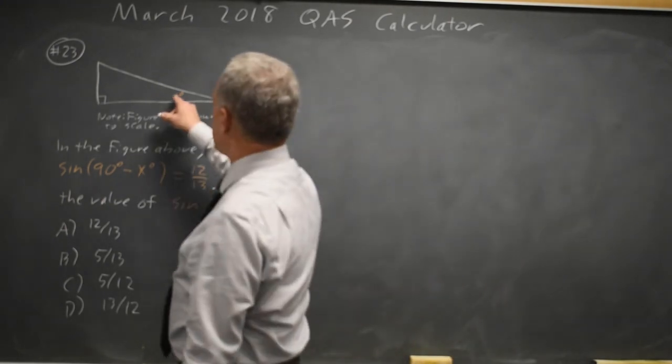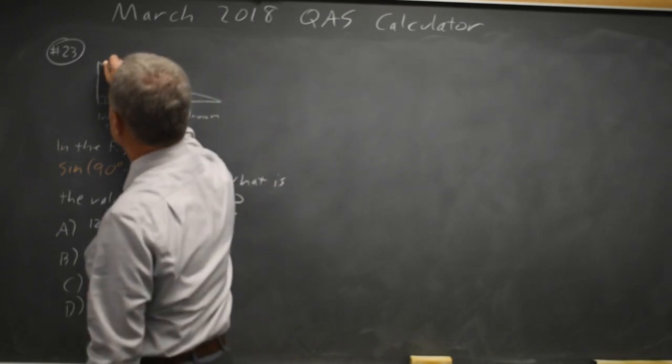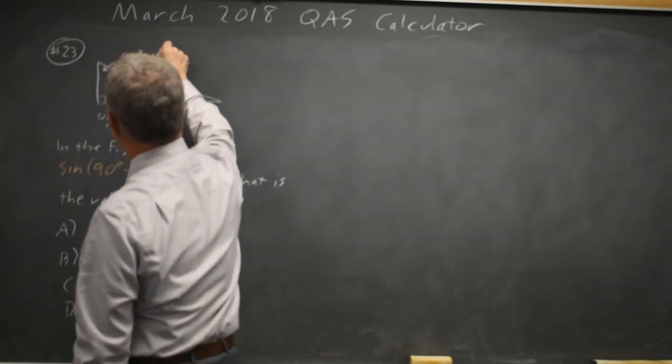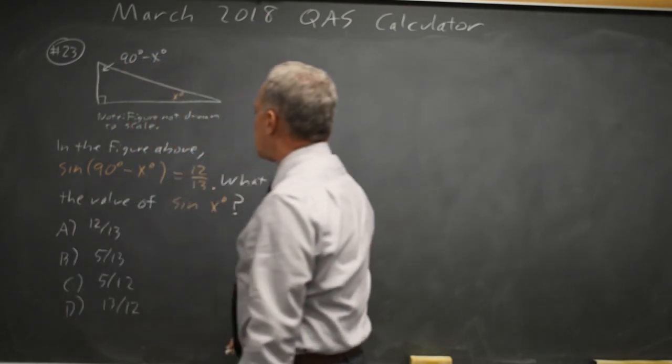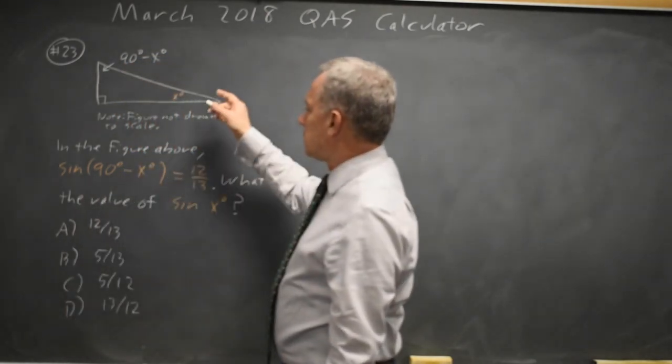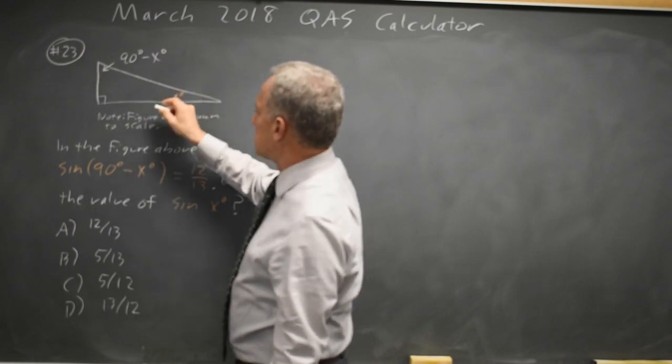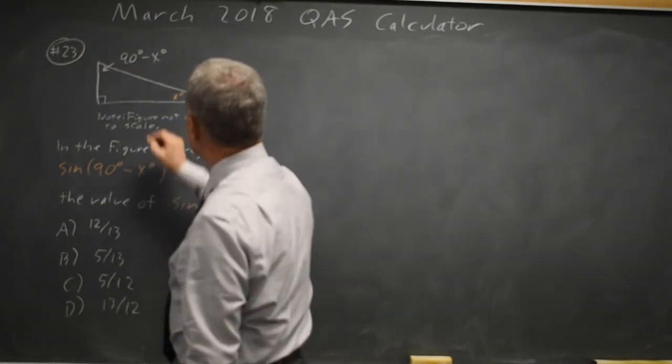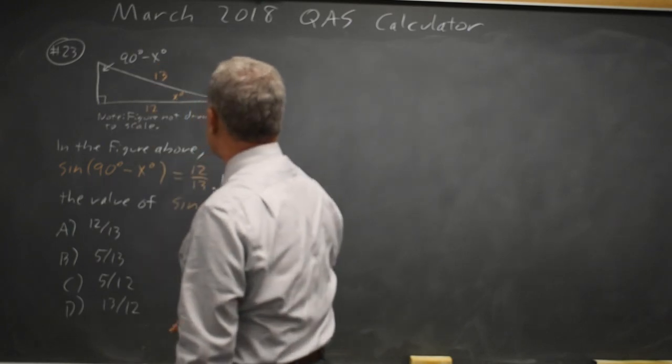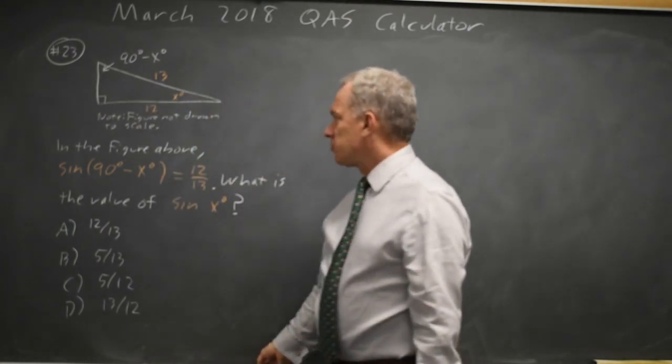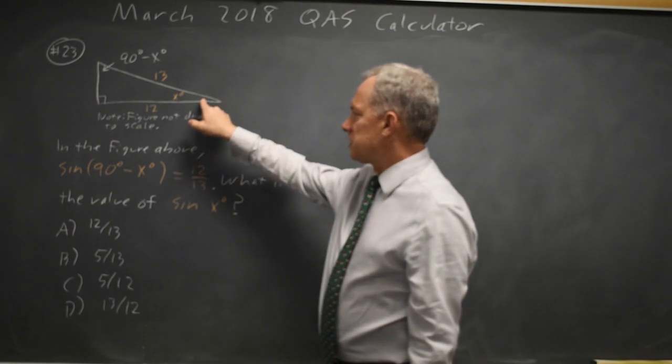So if this angle is x, and this is a right angle, this angle here is 90 minus x degrees, and we're told the sine of 90 minus x is opposite over hypotenuse is equal to 12 over 13, and they're asking for the sine of x degrees, which is this angle.